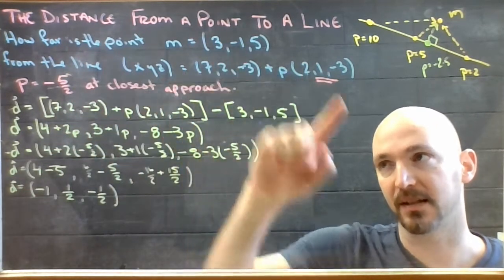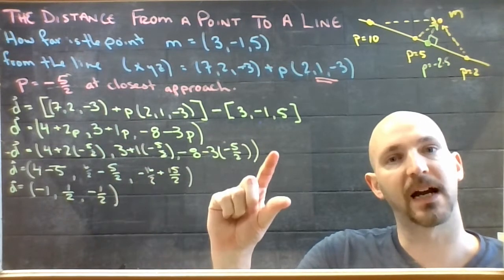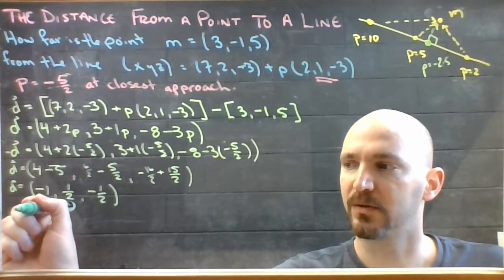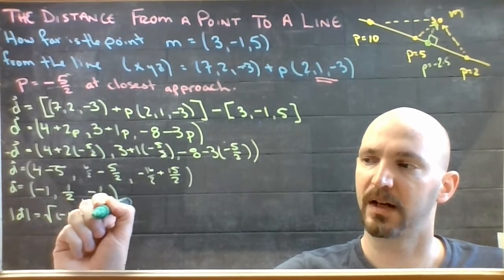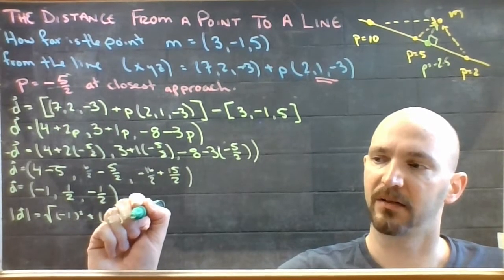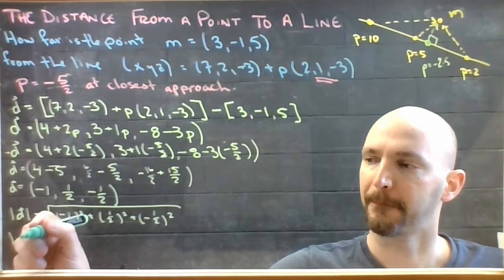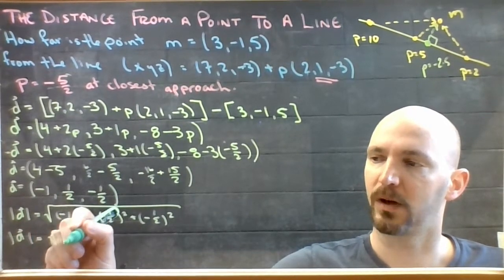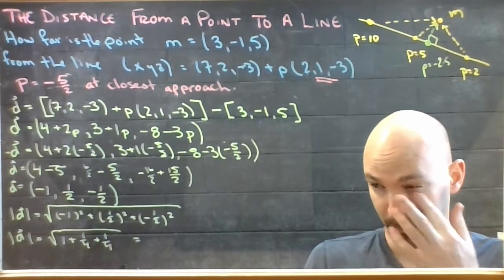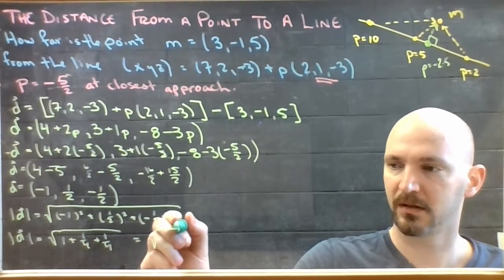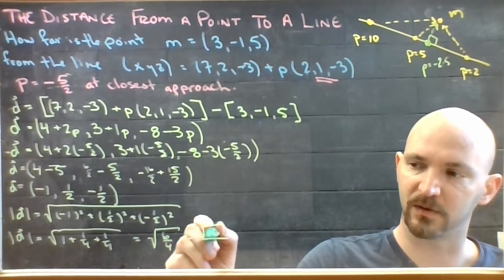I want the distance from there. All I need then is the magnitude of this vector, and that would tell me how far I have to travel. So the magnitude of D is the square root of (-1)² + (1/2)² + (-1/2)². That's 1 + 1/4 + 1/4. That's 6/4, which is the same as √6/2.